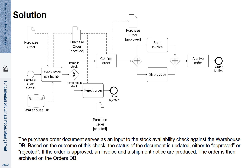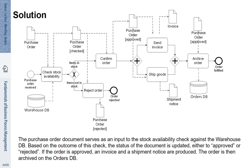This purchase order is used throughout the execution of the process, and you see here how the status of that object is updated to approved or rejected. If approved, an invoice is created and a shipping notice. Finally, the approved purchase order is stored in the orders database.